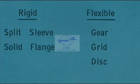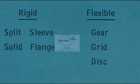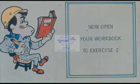Don't forget, there are two basic classes: rigid and flexible. The two basic rigid couplings we will concentrate on are the sleeve and the solid flange. The three basic types of flexible couplings we will work with are the gear, grid, and disc couplings. We'll be back to tell you more about rigid couplings after you complete exercise two in your workbook.